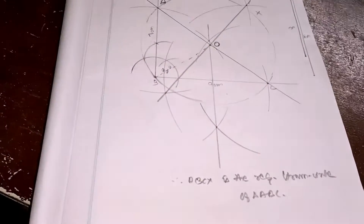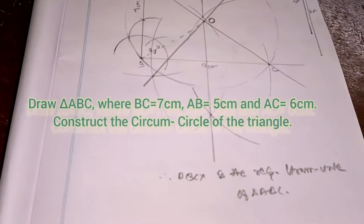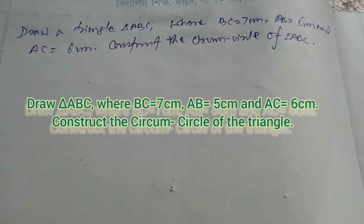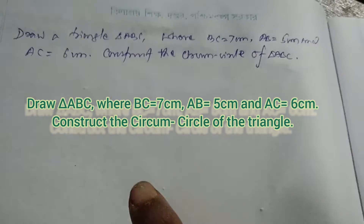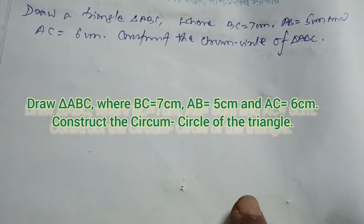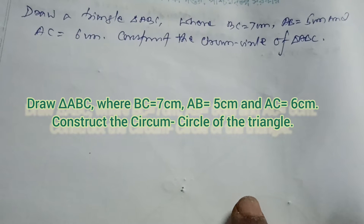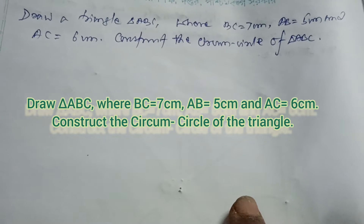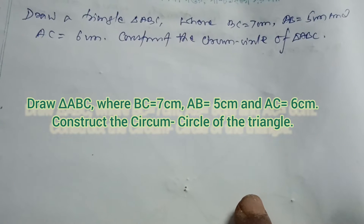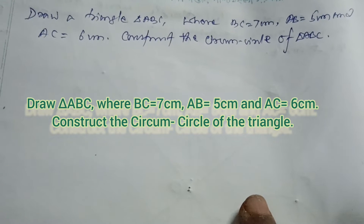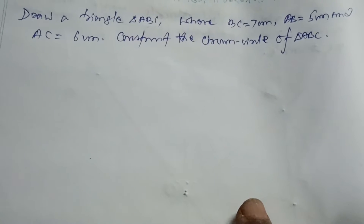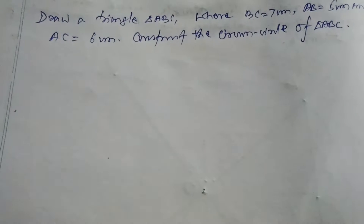Now we have the next question: draw a triangle ABC where BC equals 7 cm, AB equals 5 cm, and AC equals 6 cm. In this triangle also you are supposed to construct the circumcircle.